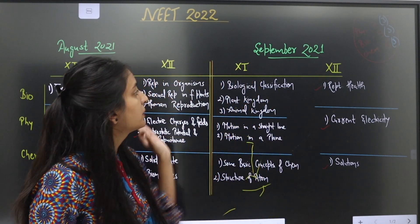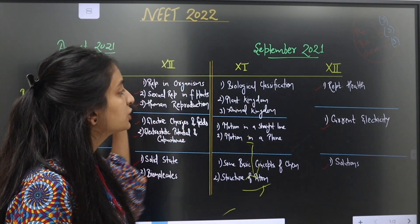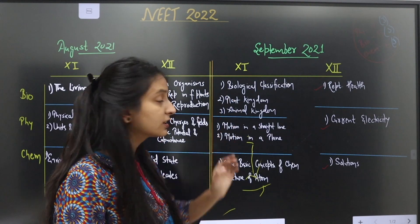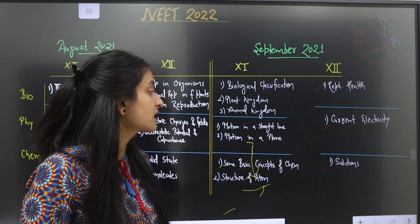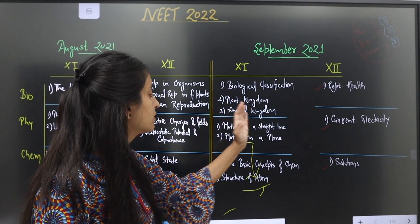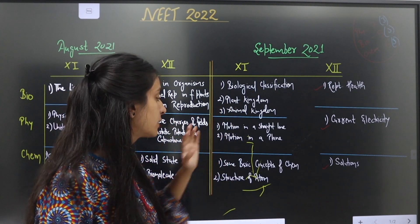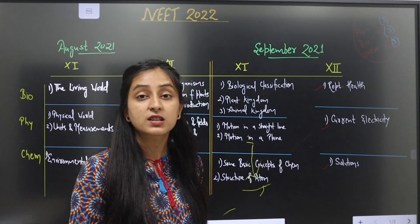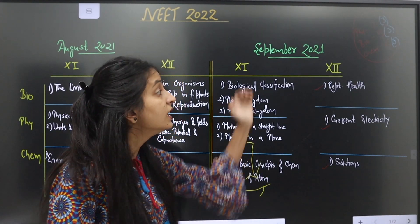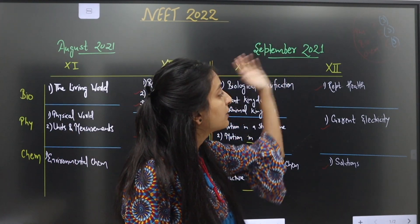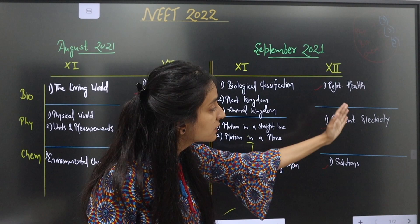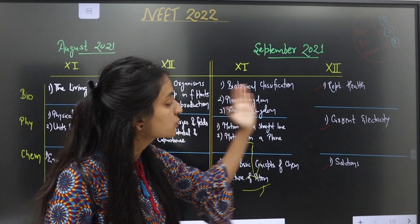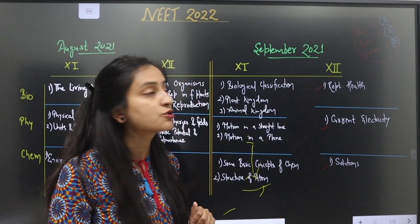In September, we covered Class 11 Biology: Biological Classification, Plant Kingdom, and Animal Kingdom. Physics Class 11: Motion in a Straight Line and Motion in a Plane. Chemistry Class 11: Some Basic Concepts of Chemistry and Structure of Atoms. Class 12 Biology: Reproductive Health. Class 12 Physics: Current Electricity. And Class 12 Chemistry: the Solutions chapter.